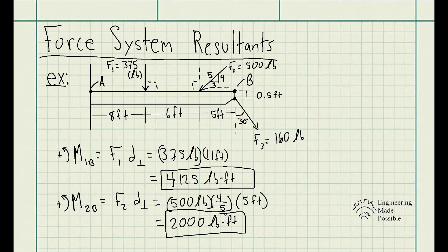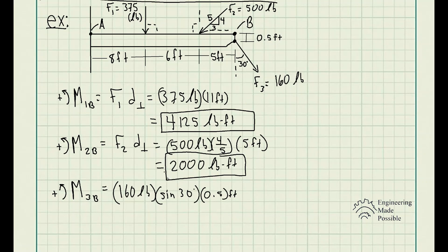Now let's go ahead and solve for the final force, F3. For the third force, we have 160 pounds, but in this case, we also have an X component and a Y. Now since the Y component is being directed right directly where point B is, this force will not cause any rotation about point B, only the X component in this case.